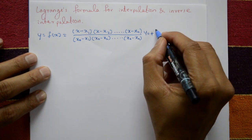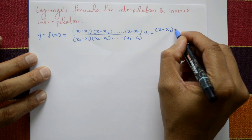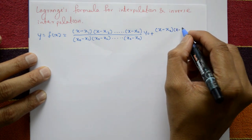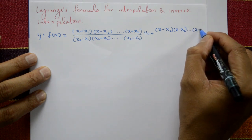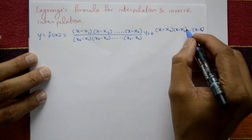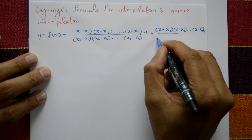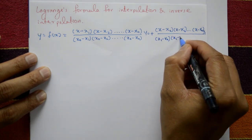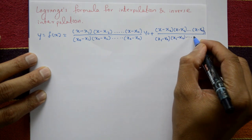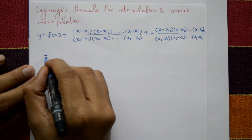Plus the second term: x minus x naught, into x minus x2, x minus x3, and so on up to x minus xn, multiplied by y1, divided by x1 minus x naught, x1 minus x2, and so on x1 minus xn.